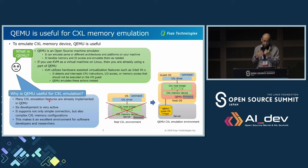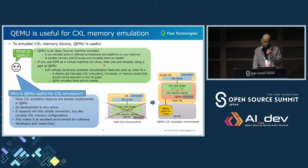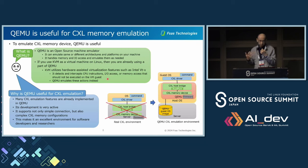I think QEMU is useful for CXL memory emulation. QEMU is an open source machine emulator. It can emulate the same or different architectures and platforms on your machine. It handles memory and I/O access and translates them as needed. If you use KVM as a virtual machine on Linux, you are already using a part of QEMU. KVM utilizes hardware-assisted virtualization features such as Intel VT-x, detecting and intercepting CPU instructions, I/O access, or memory access that should not be executed on the VM guest. QEMU emulates these actions instead.